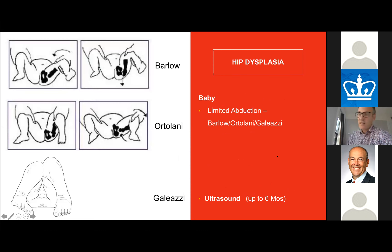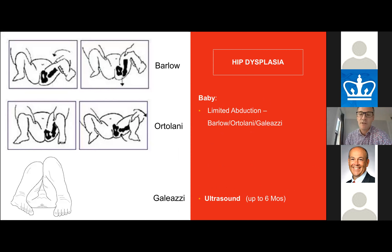In young babies, a dysplastic hip will present with limited abduction. Classic tests include the Barlow maneuver — trying to dislocate the unlocated hip — the Ortolani maneuver to reduce the hip, and the Galeazzi sign showing leg length difference. Ultrasound is the preferred method of diagnosis at a young age.